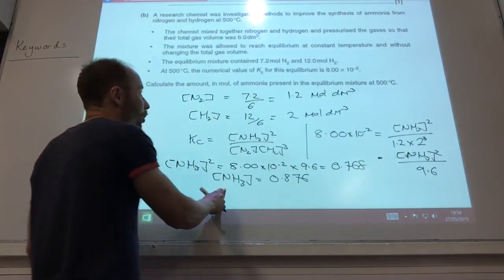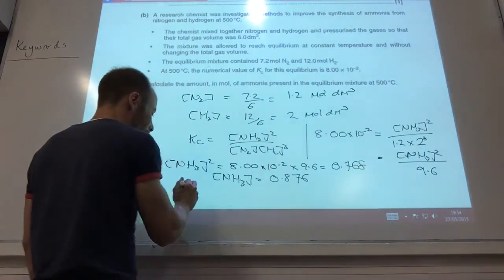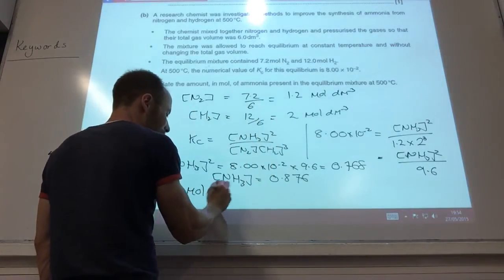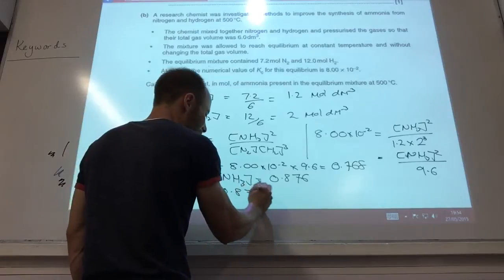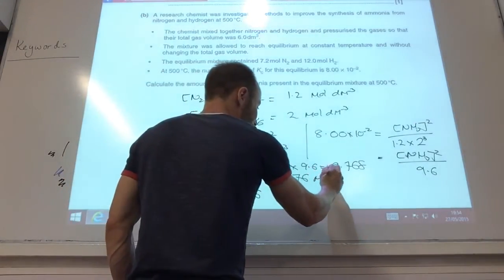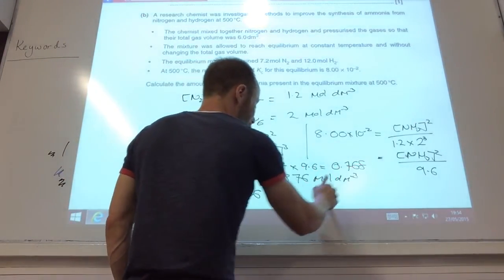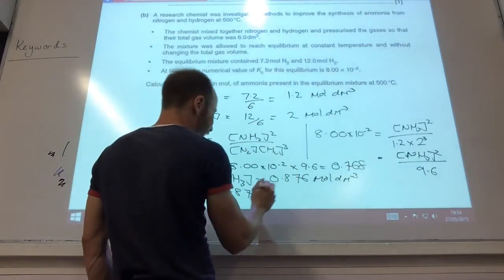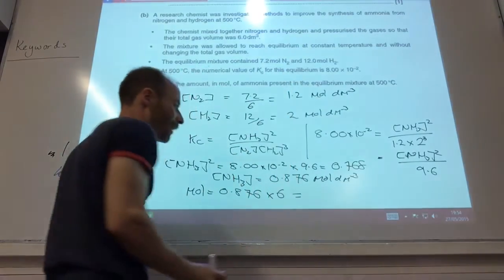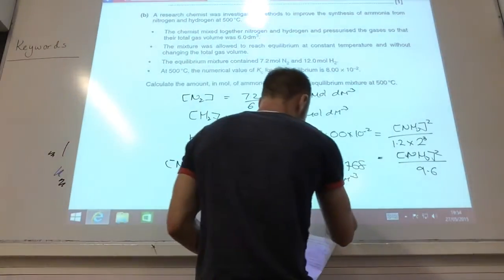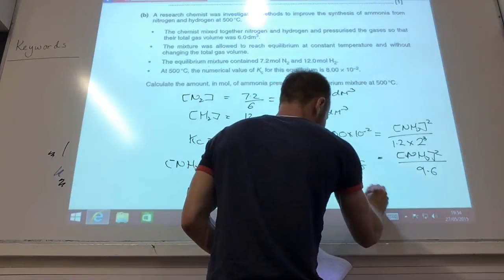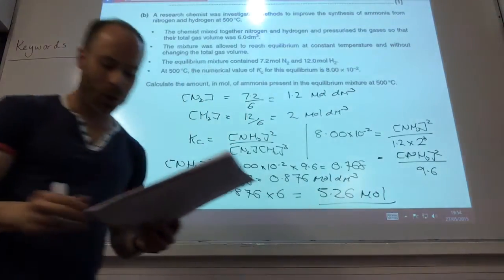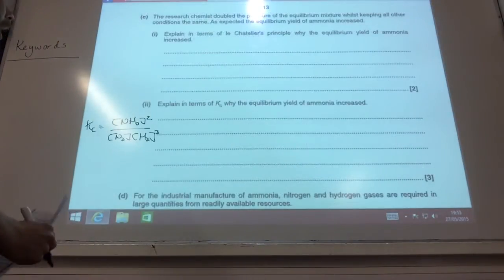But that's my concentration. They want the moles. So the moles is going to be 0.876. That's in moles per decimetre cubed, remember? The volume is actually 6 decimetres cubed, so I need to times it by 6 to find out how much is in 6 decimetres cubed, which gives me 5.26 moles.